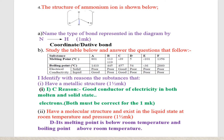Question B: Study the table below and answer the questions that follow. You are given substances A, B, C, D, and E. You are also given their melting points, boiling points, and whether they are good or poor conductors of electricity in solid and liquid form.